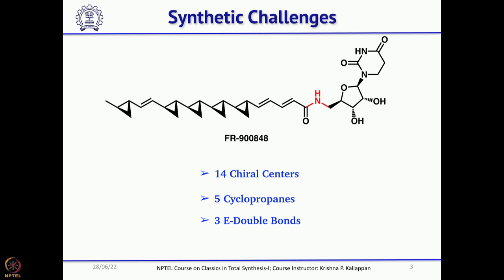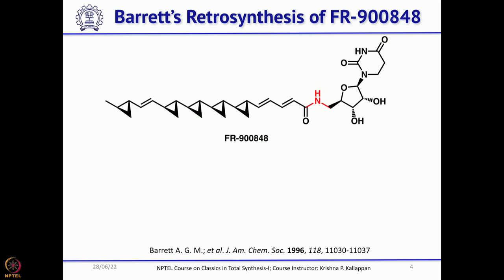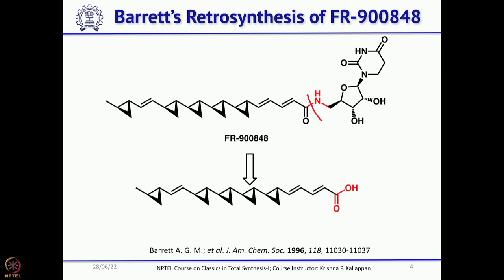These are the major challenges one has to think about while planning a proper retrosynthesis. According to Barrett, the first disconnection can be done by cleaving the amide bond — that is the obvious disconnection when you have an amide, and the easiest bond to cleave is the C-N bond. That cleavage gives the corresponding carboxylic acid and the nucleoside as the other fragment. This simplifies the retrosynthesis of FR900848 to making only this carboxylic acid, since the nucleoside is a known compound.